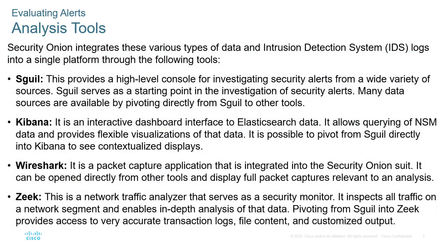For analysis tools we have Sguil, which provides a high-level console for investigating security alerts. You can pivot directly from Sguil to other tools. Kibana is an interactive dashboard that interfaces with Elasticsearch data, allowing querying of other NSM data to provide more flexible data visualization. Wireshark is a packet capture analysis application built into the Security Onion suite. Zeek is a network traffic analyzer that serves as a security monitoring tool, inspecting all traffic from a network segment for in-depth analysis and providing access to accurate transactional logs, file content, and customized outputs.